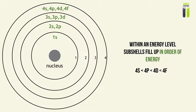The subshells fill up in order of energy. When filling electrons for a given element, they will fill the S subshell first, then the P subshell, then the D subshell, and then the F subshell, because they fill up in order of increasing energy. So S, P, D, F — remember that as increasing in energy.